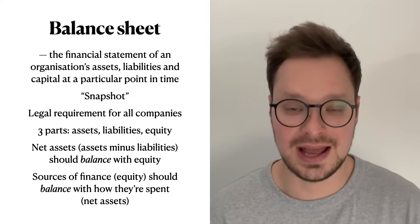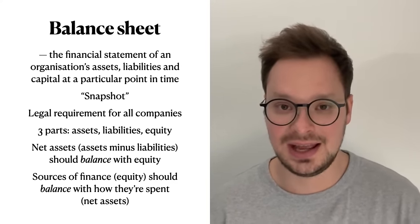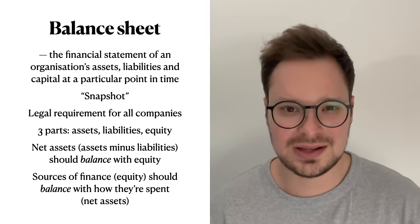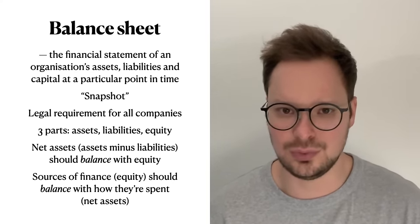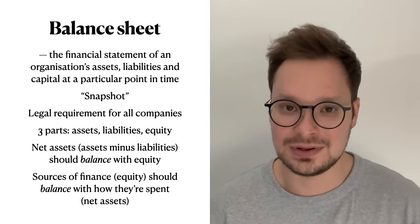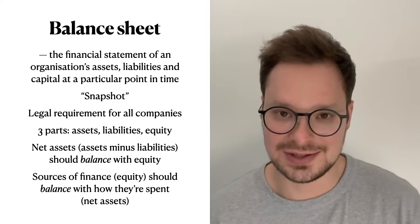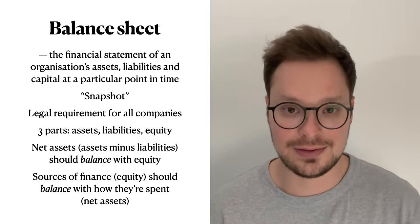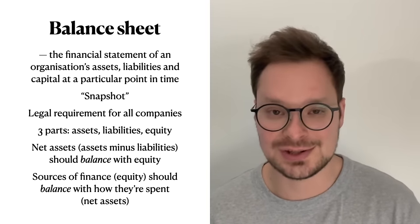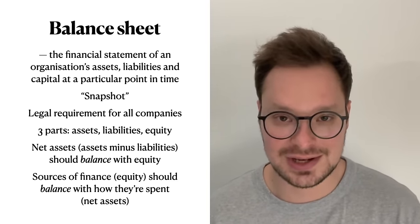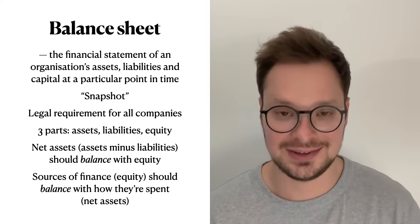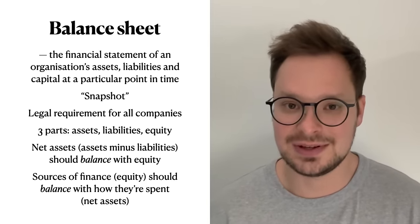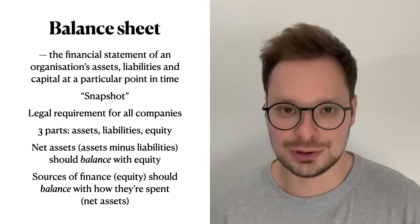We'll talk about all three parts one by one. Why is it called a balance sheet? Net assets — the difference between all assets and all liabilities — should balance with equity. In other words, sources of finance (equity) should balance with how they are spent (net assets). That's why it's called a balance sheet. If it doesn't make sense now, hold on — let's go through all three parts and it'll be much clearer.